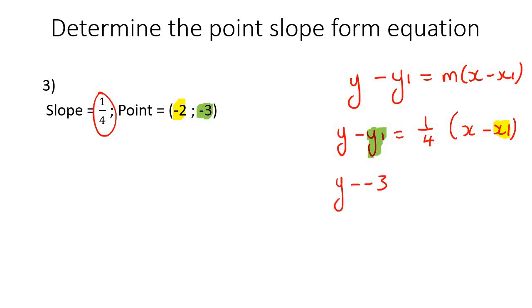And so now we just go fill that all in. It's y take away negative three. See, that's a negative three, but there was already a negative. Don't worry about that. You just fill in the two negatives. That's fine. We'll fix it up in the next step. And then that's equal to the slope, which is a quarter, and then x take away negative two. And so that ends up becoming y plus three equals a quarter times x plus two.